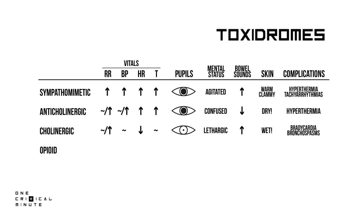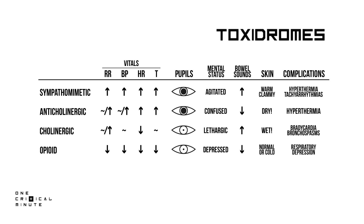Opioids like morphine cause a depression in all vital signs. They have pinpoint pupils and decreased bowel sounds. Their mental status is depressed. Watch out for respiratory depression.